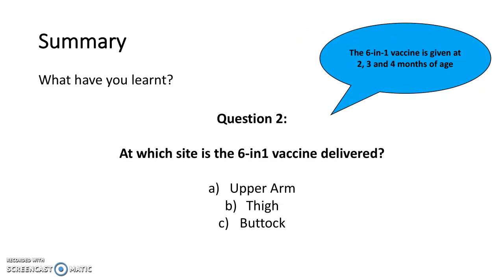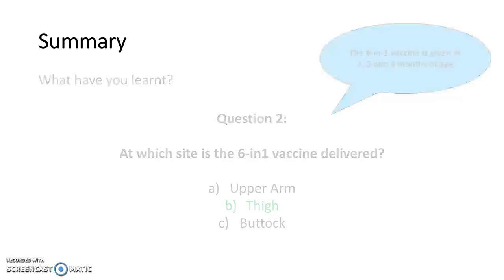Question 2 is: at which site is the 6-in-1 vaccine delivered? The answer is option B — the 6-in-1 vaccine is delivered into the thigh.